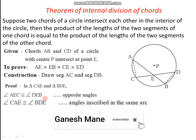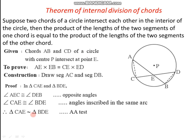Now we have two pairs of angles of these two triangles which are congruent. That is why these two triangles must be similar by AA test of similarity — triangle CAE is similar to triangle BDE. As these two triangles are similar, the corresponding sides must be in proportion. Now we have to select the sides we need to prove — we take side AE, which corresponds to the second and third vertex of the first triangle.